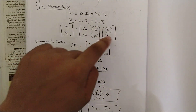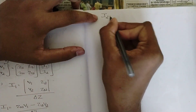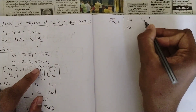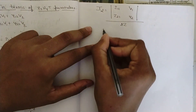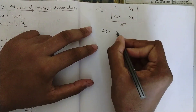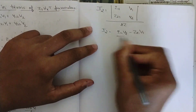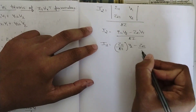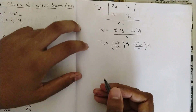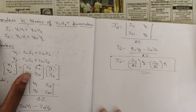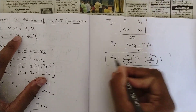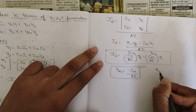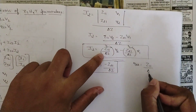Now again apply Crammer's rule, this time considering I2. I2 equals the determinant with the first two elements Z11 and Z21 as is, and here we write V1 and V2, divided by delta Z. Solving: I2 = Z11·V2 minus Z21·V1, divided by delta Z. So I2 = (minus Z21 / delta Z)·V1 + (Z11 / delta Z)·V2. Comparing with I2 = Y21·V1 + Y22·V2: Y21 = minus Z21 / delta Z, and Y22 = Z11 / delta Z.